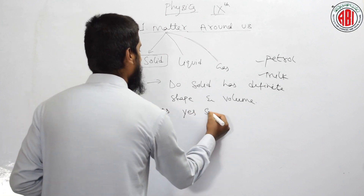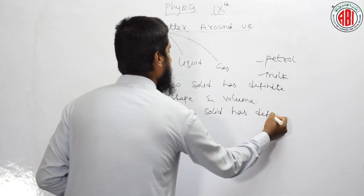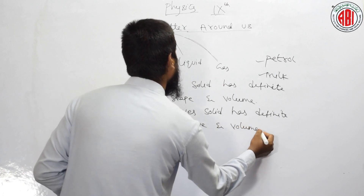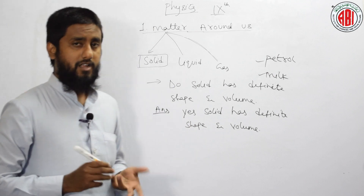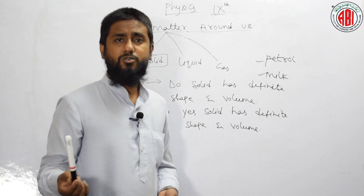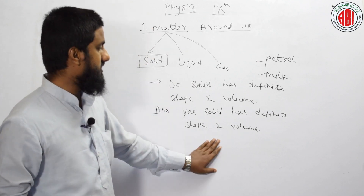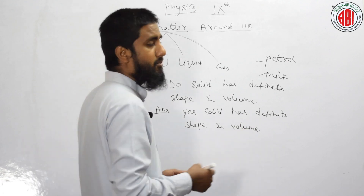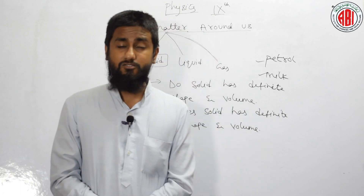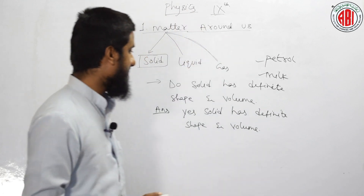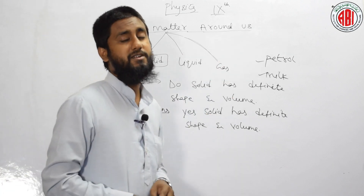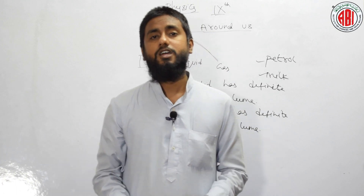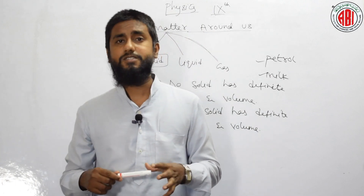Yes — solid has definite shape and volume. For your exam reasoning, you can write: let us consider dropping a pen or book on the floor. The pen or book remains rigid with a definite shape, volume, and definite boundaries. This tells us that solid has two things fixed: shape and volume. There is no change in shape and volume if we move the solid from one place to another.